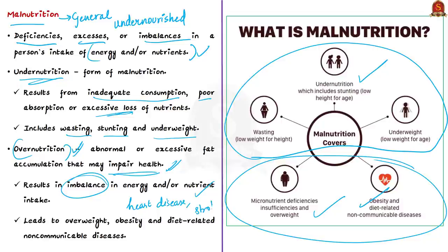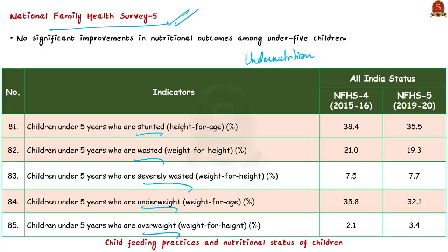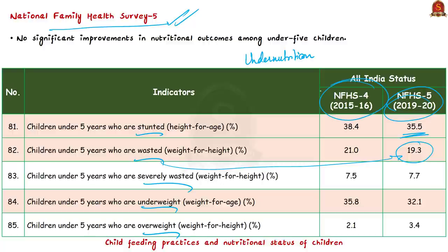Coming to the op-ed discussion, the NFHS 5 focuses on the undernutrition form of malnutrition, particularly covering wasting, stunting, and underweight among children under the age of five. Looking at the survey data, in the period 2019 to 2020, there is 35.5% stunting among children under five, wasting at 19.3%, along with data for underweight and overweight. Comparison with NFHS 4 results helps us understand whether there is improvement in children's nutritional status.